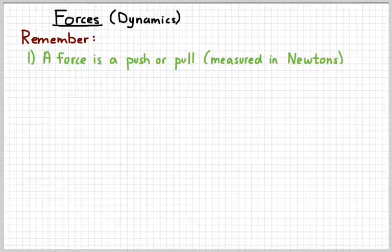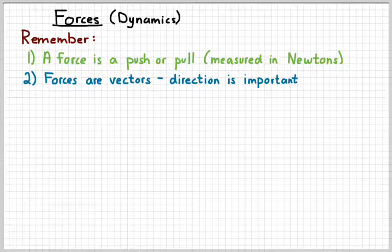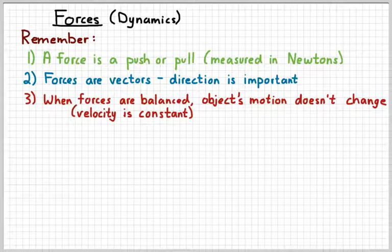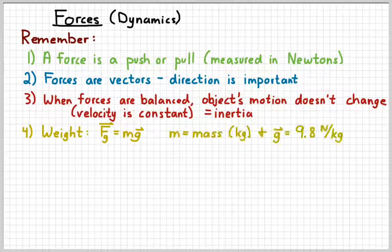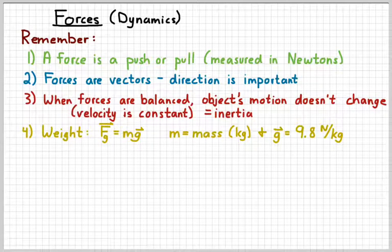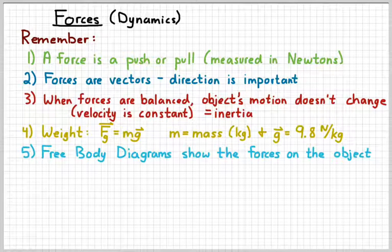Remember that forces are pushes and pulls. We can measure those in newtons. Remember a newton is a kilogram times meter per second squared. Forces are vectors so directions are important when we draw those things. If the forces are balanced then the object's motion does not change — we call that the law of inertia. Remember that the weight of an object can be given by mass times the gravitational field, and on this planet the gravitational field has a value of 9.8 newtons per kilogram. Lastly, remember that we can draw free body diagrams to show the forces on an object.